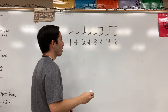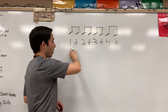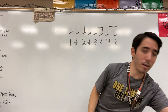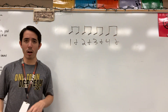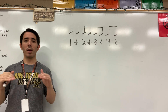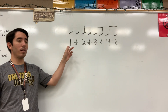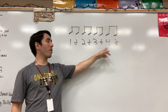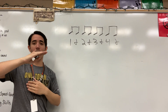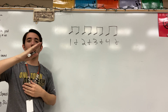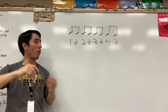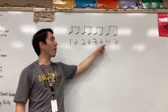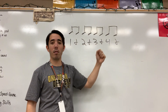Hopefully that didn't confuse you — if it did, don't worry, let's move on. Let's try to count this two or three times together. Sit up nice and tall, down-up, down-up. Ready, set, go: one-and, two-and, three-and, four-and. My foot is going one-and, two-and, three-and, four-and. One more time: one-and, two-and, three-and, four-and. Really easy!